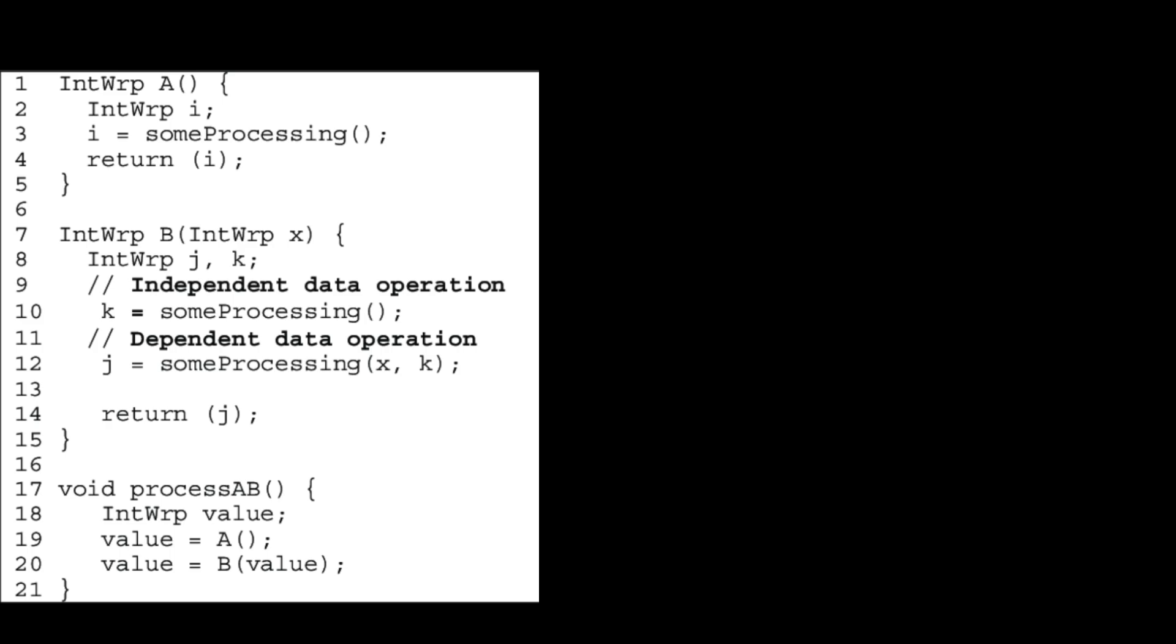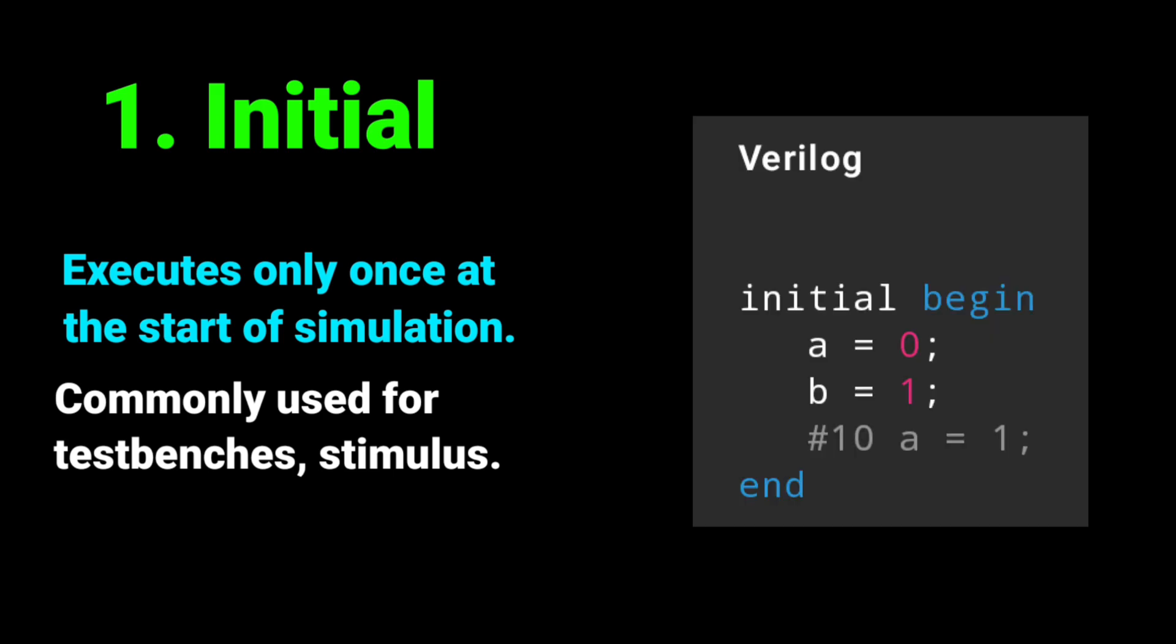In Verilog, we describe hardware behavior using procedural blocks. These are special code sections where we write sequential statements. The two main blocks are Initial and Always. First one is Initial block. It executes only once at the start of simulation. Commonly used in test benches for applying stimulus. Here's the example of Initial block.